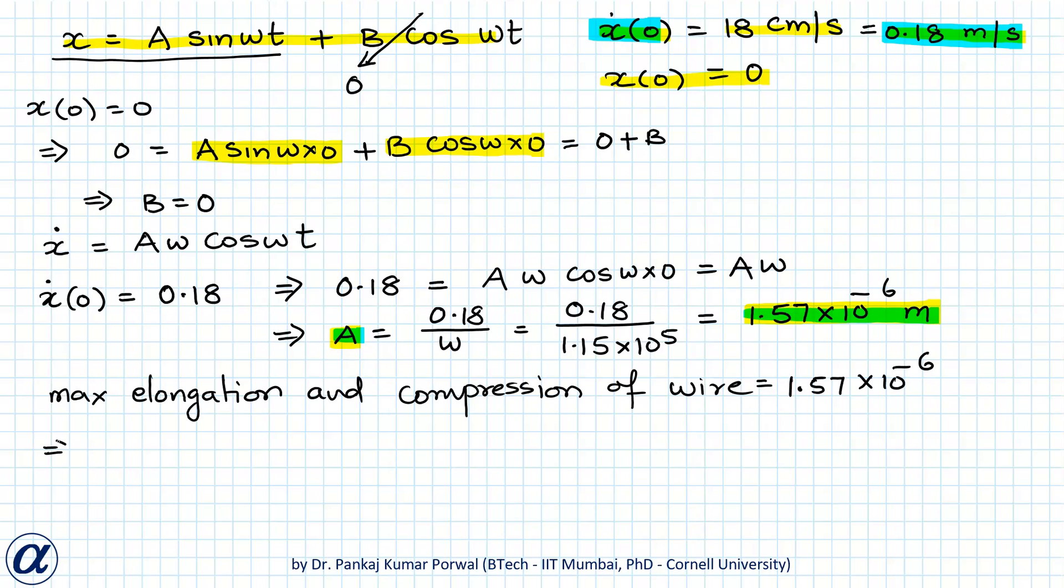So from this we can find maximum strain, that is maximum elongation or compression divided by original length of the wire. So that will be 1.57 into 10 to the power minus 6 divided by 3, that is equals to 5.23 into 10 to the power minus 7.